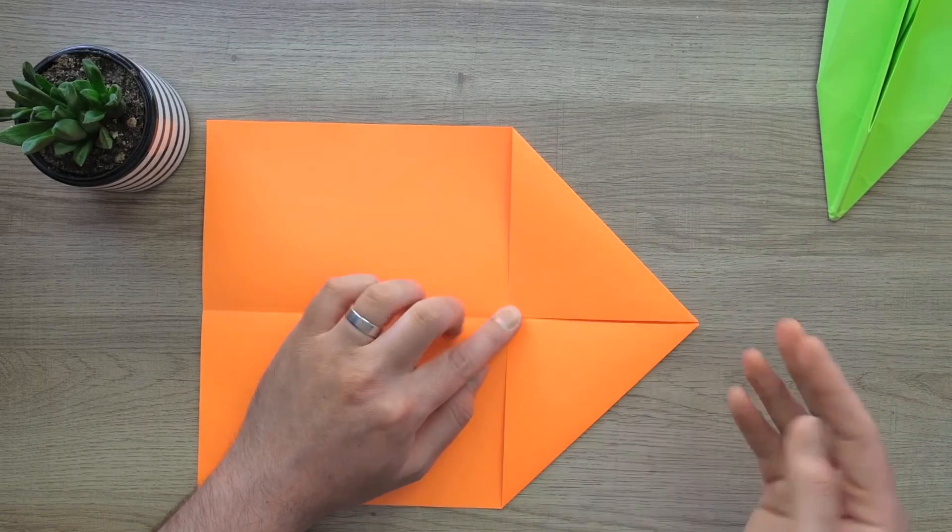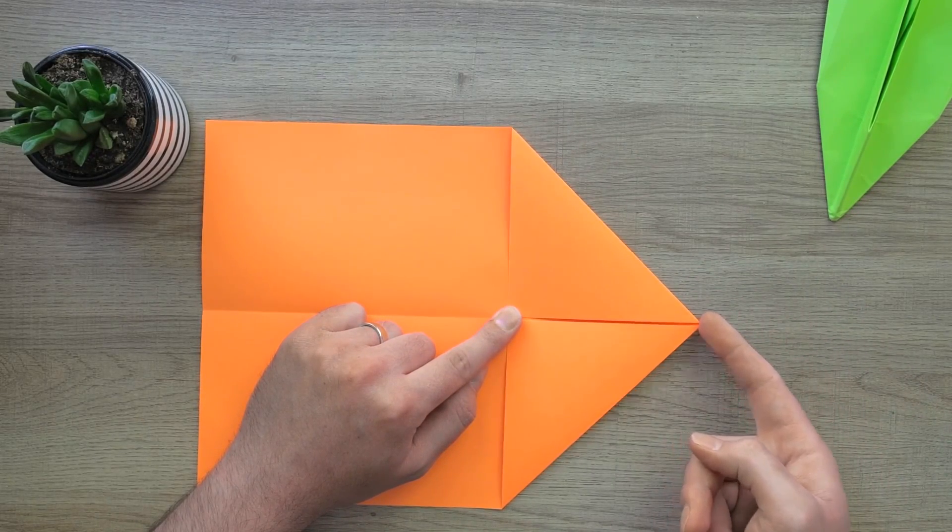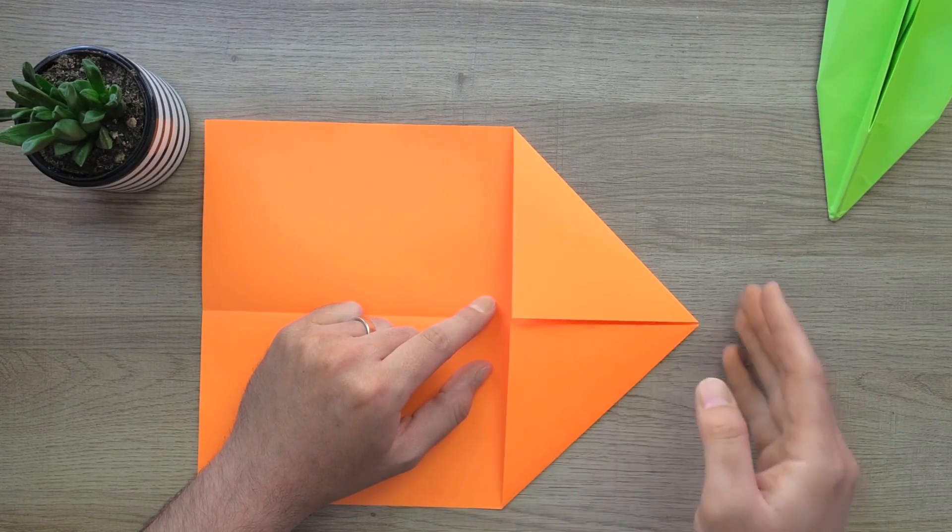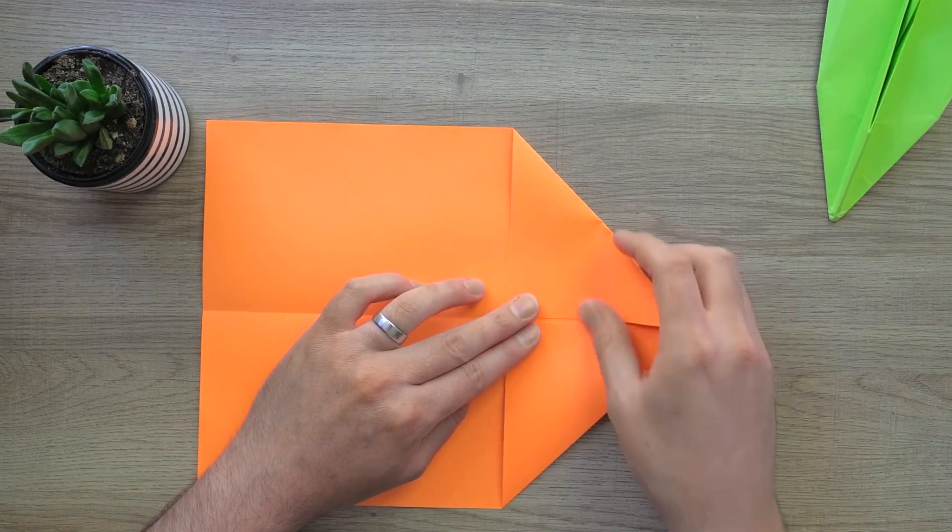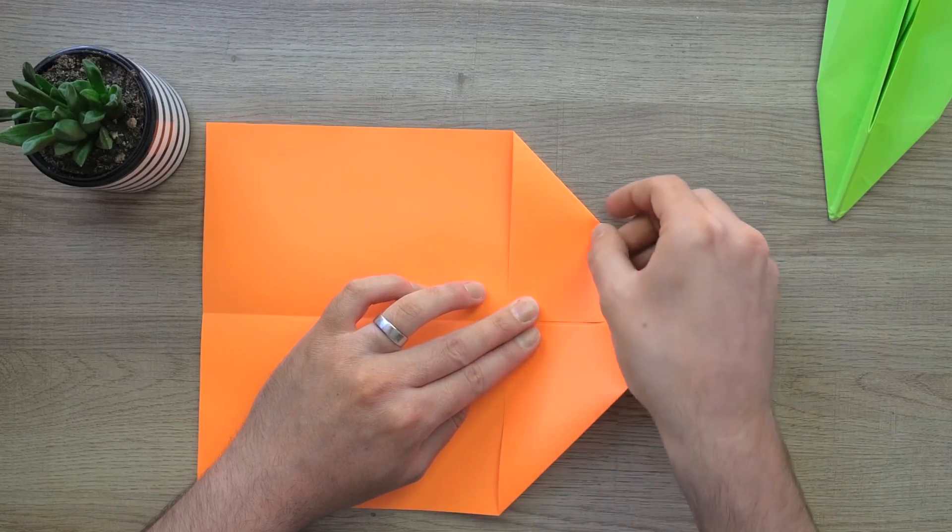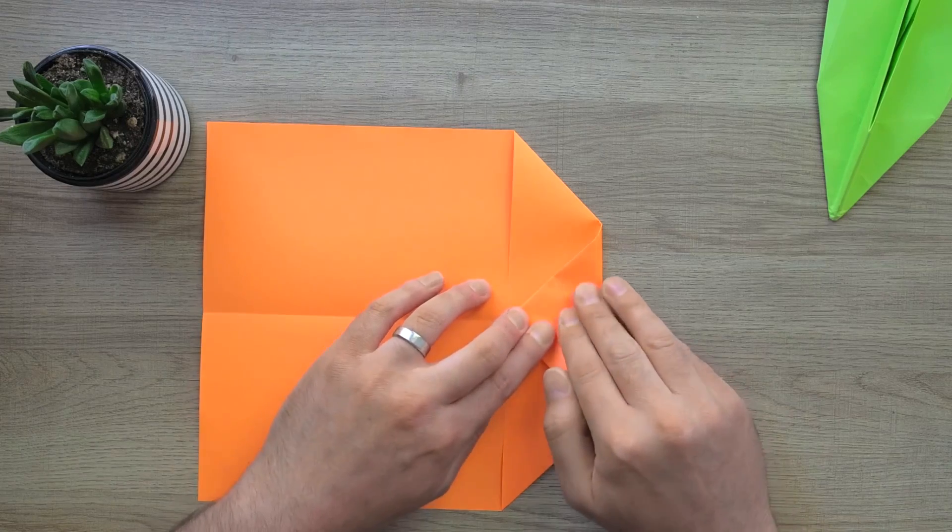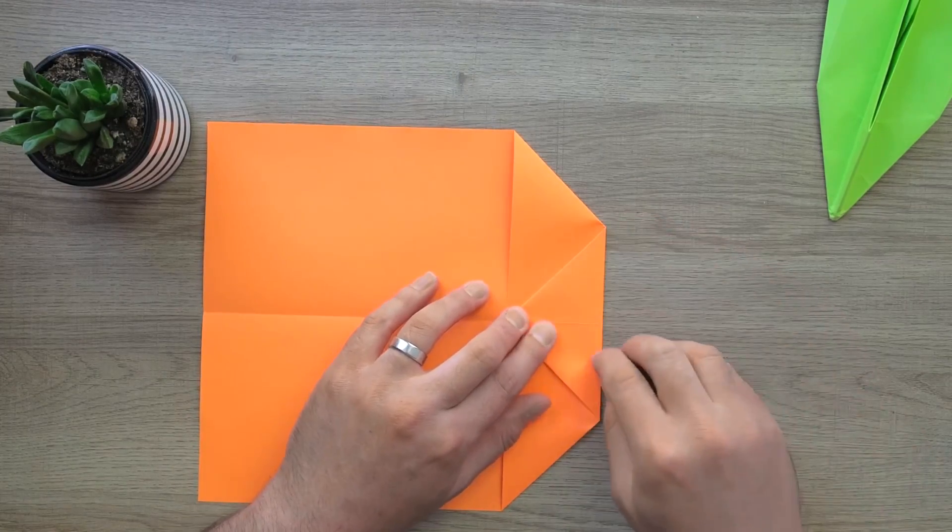Okay, and now we are going to fold this point that we just made so it intersects with this point here where those corners intersect. So we just fold it right over like so. Crease that down.